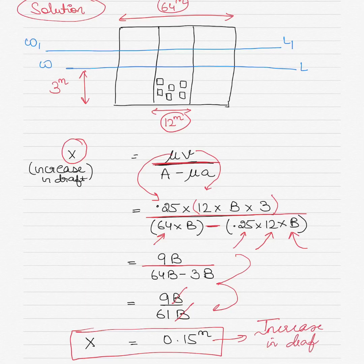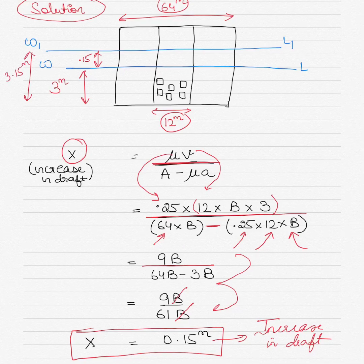So the increase in draft is 0.15 meters. If the original draft was 3 meters, the new draft becomes 3.15 meters. I'll take up more examples for you to watch so you get a better understanding of the topic. Bye for now.